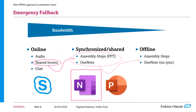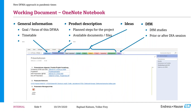Most of the time people are in the first two connectivity columns — mostly online, sometimes a little limited on video and screen sharing, but the rest works quite fine. So how does this OneNote notebook look? We have a couple of tabs, each with several pages. The first tab has general information — for example, the main goal or focus of the DFMA session, whether concept evaluation or cost reduction, since this requires a slightly different moderation scheme.